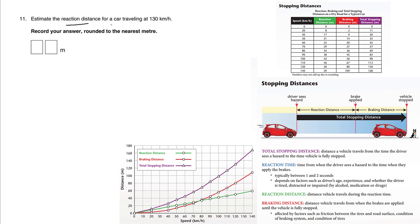Estimate the reaction distance for a car traveling at 130 kilometers an hour. Record your answer to the nearest meter. I'm looking at this table up here and we're thinking about the speed being between 120 and 140. Now unfortunately the reaction distance is not given.